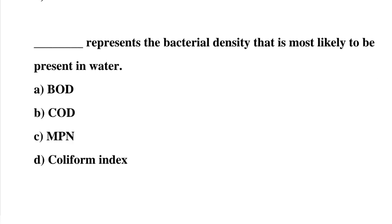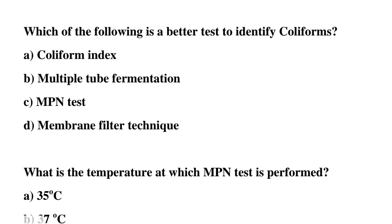Next question: — represents the bacterial density that is most likely to be present in water. Option A: BOD, option B: COD, option C: MPN, option D: coliform index. The correct answer is option C: MPN. Which of the following is the better test to identify coliforms? Option A: coliform index, option B: multiple tube fermentation, option C: MPN test, option D: membrane filter technique. The correct answer is option D: membrane filter technique.